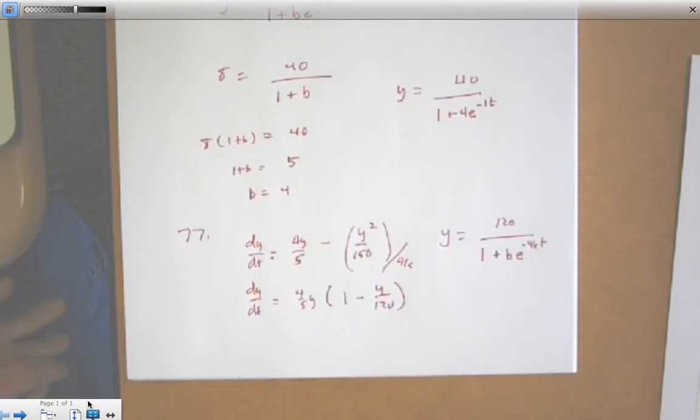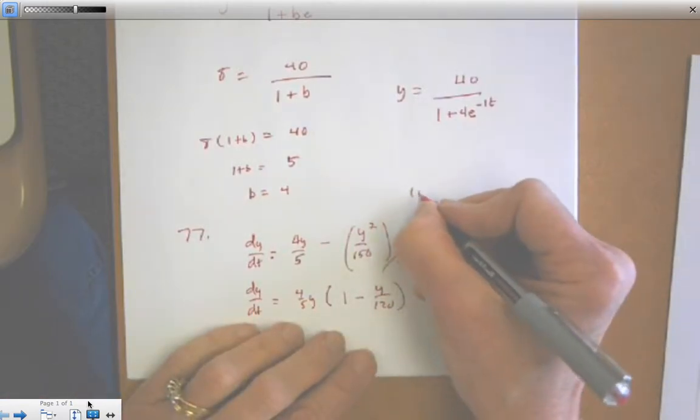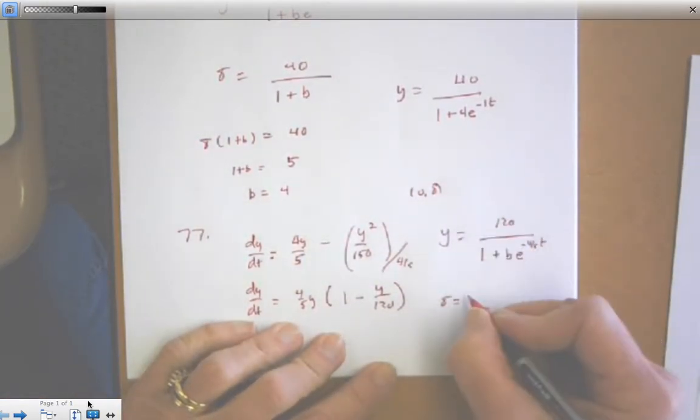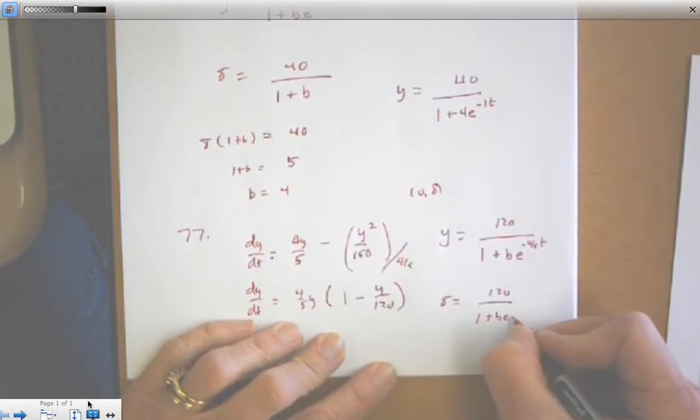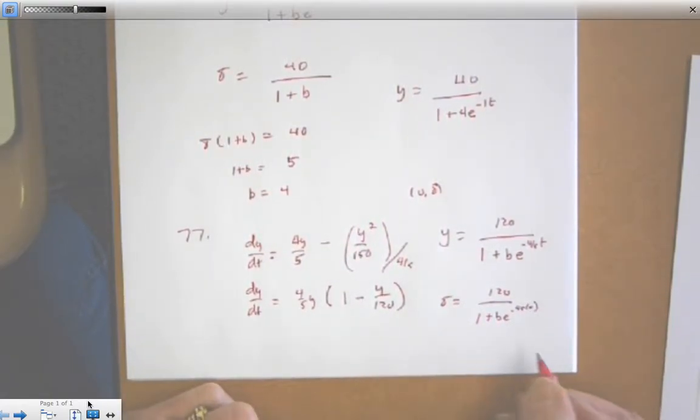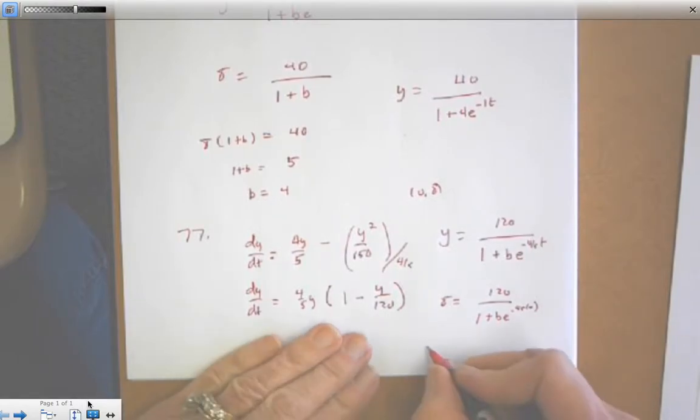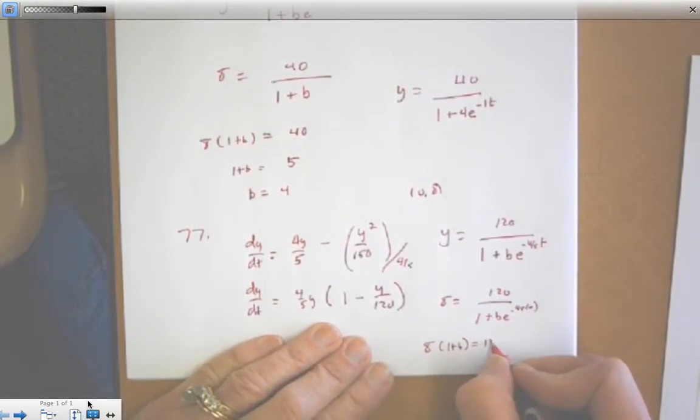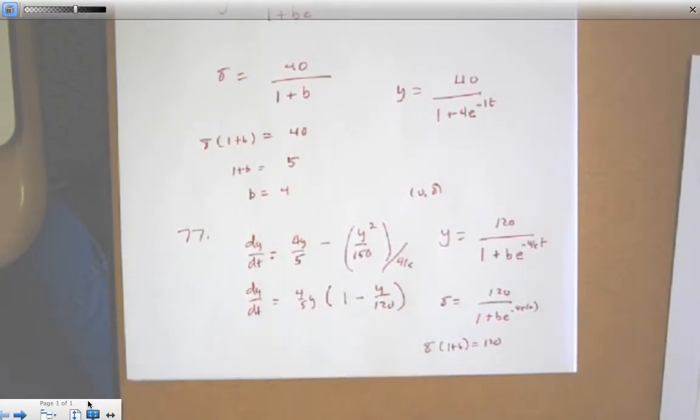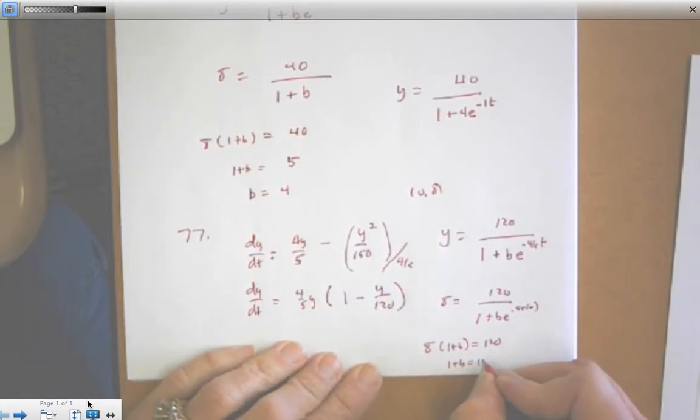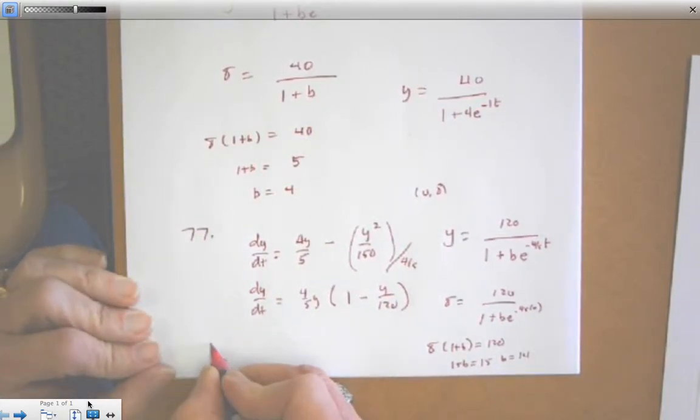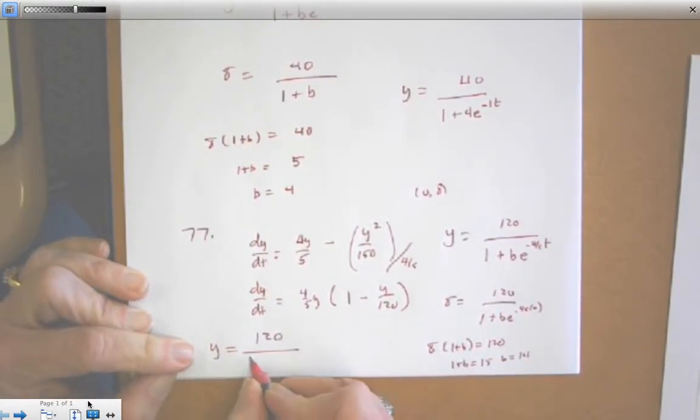And now we're going to plug in the initial condition. On 77, the initial condition is 0, 8. So I'm going to plug in 8 on this side and 0 here. And anything with 0 power is 1. So now I've got 8 times 1 plus b equals 120. So 1 plus b equals 15. So b is equal to 14. So that means my solution is y equals 120 over 1 plus 14 e to the negative 4 fifths t.